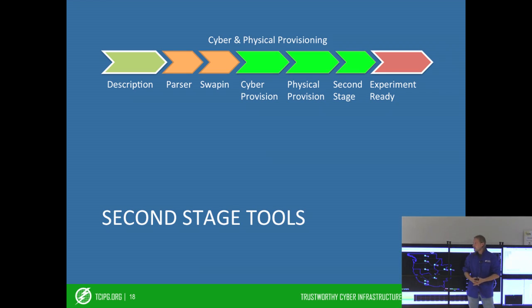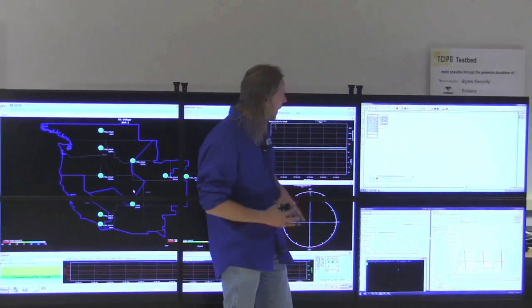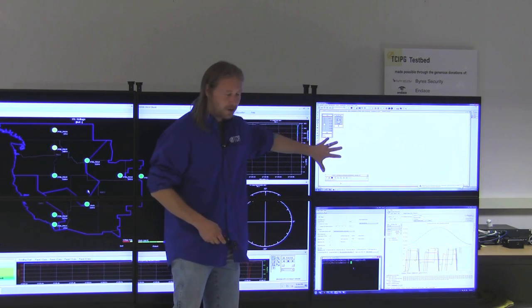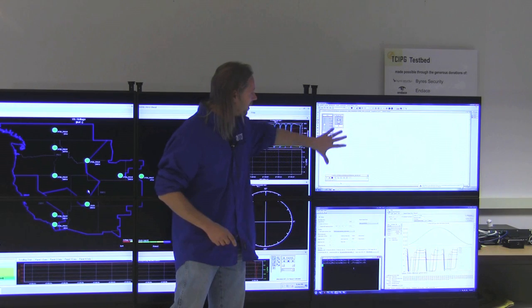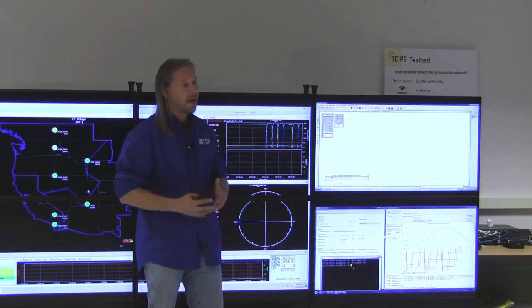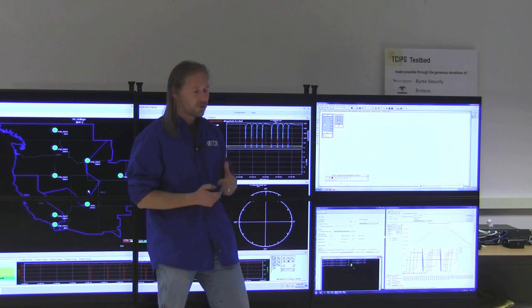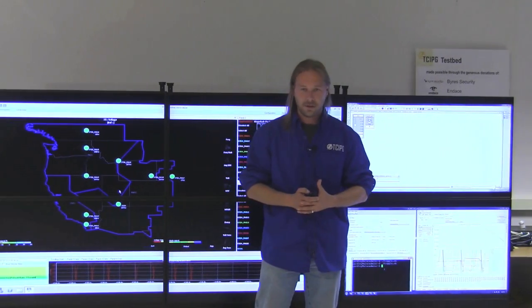Now we'll look at some of the second stage tools that we've developed. We've developed a tool called RS-CAD Streamer. RS-CAD Streamer is an interaction engine for the RTDS. Tim is going to execute a command within the running experiment that is actually interacting with the GUI interface here. Normally an experimenter would have to have this GUI running on their own machine and manually click those buttons to make that switch flip, but we're able to do that programmatically from within the experiment. RS-CAD Streamer is a plug-in based system that allows the experimenter to create a plug-in that interacts with RTDS and performs any actions they need for their particular experiment.